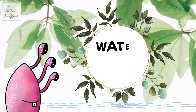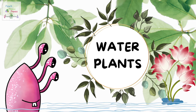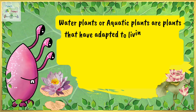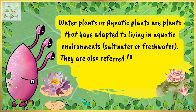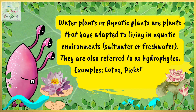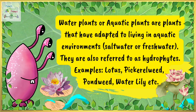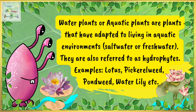And the last type of plants — the water plants. Water plants or aquatic plants are plants that have adapted to living in aquatic environments, salt water or fresh water. They are also referred to as hydrophytes. For example, lotus, pickerel weed, pond weed, water lily, etc.